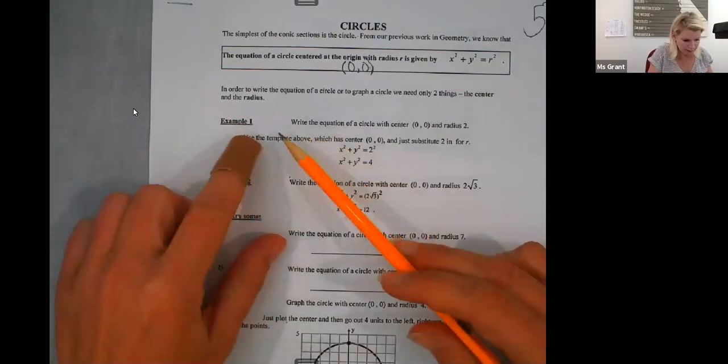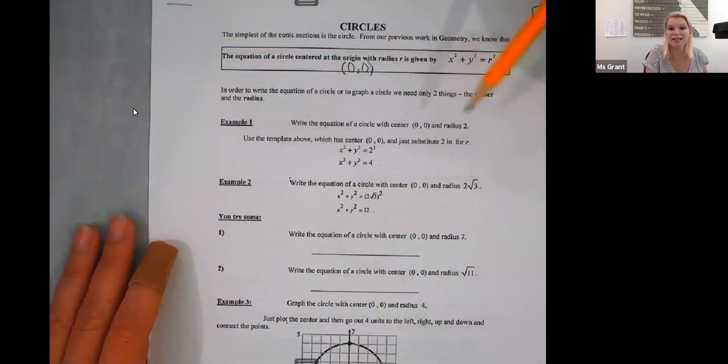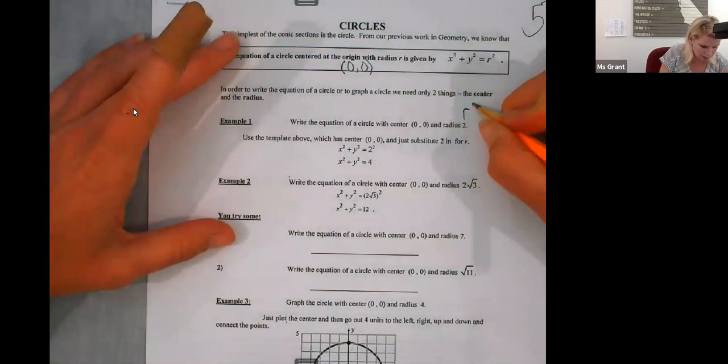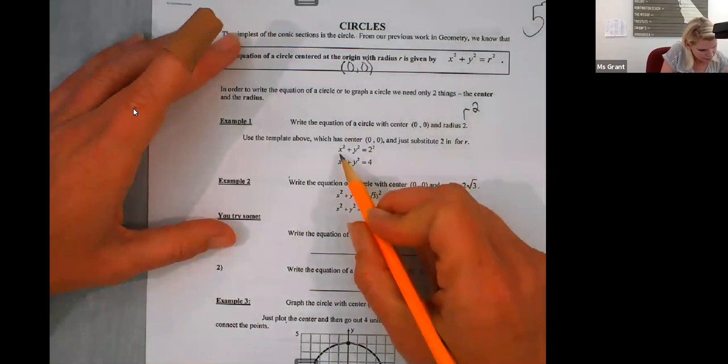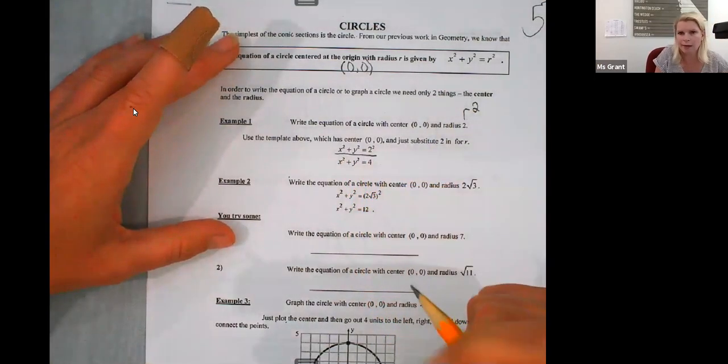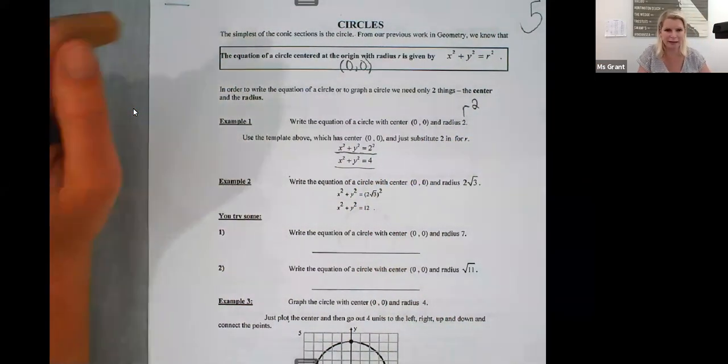So let's look at example one, right? The equation of the circle with the center at zero, zero in a radius of two. Since my radius is two, I have to do r squared. So that's going to be x squared plus y squared equals two squared. And then you simplify, do the math, you get x squared plus y squared equals four. So that's pretty easy, right?